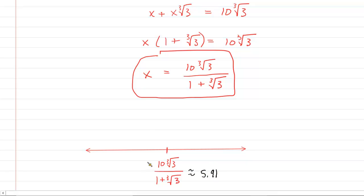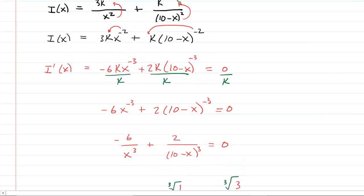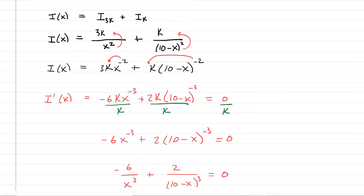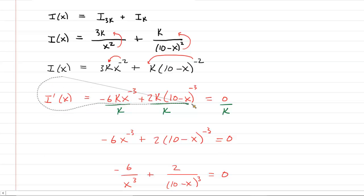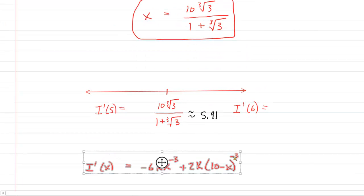So we would have to choose values smaller than and greater than 5.91. We might choose 5 here. So we would have to do I prime of 5. We'll show you how to do that in a moment. And you'd also have to do I prime of a number greater than 5.91. We could use 6. So we have to plug this into the derivative. And the derivative was this expression right here before we divided the K out of it. So let's grab that and bring it down here.